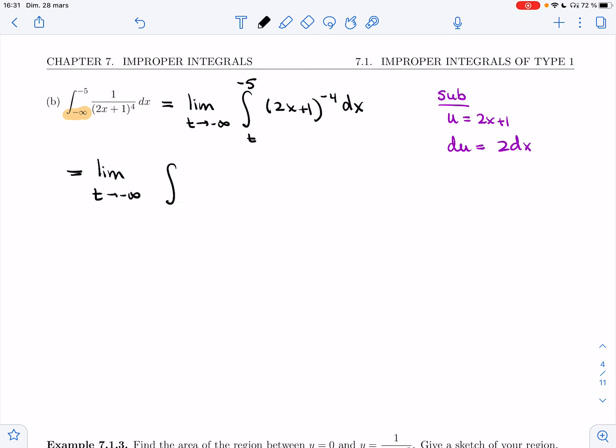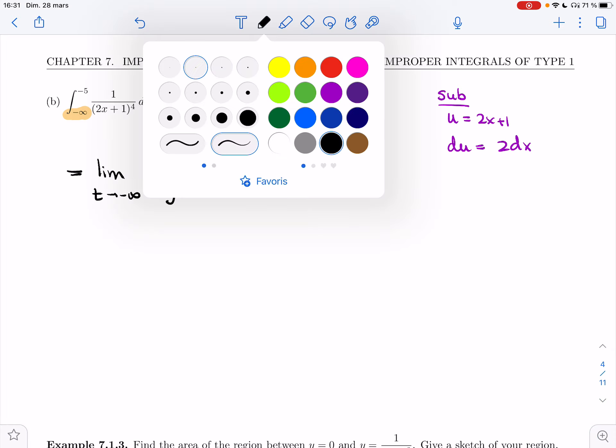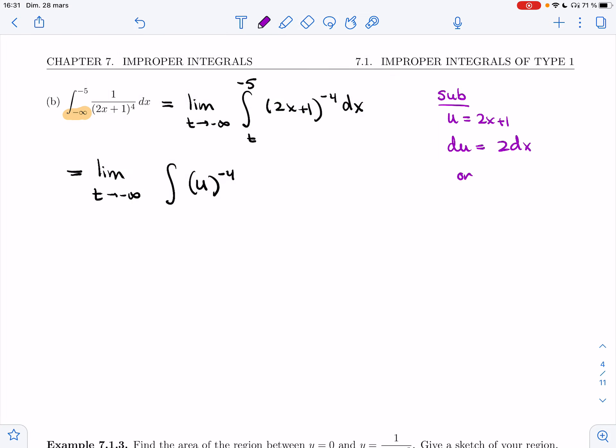If I plug in t, wait, so u instead of 2x plus 1 to the minus 4 dx, let's figure out what dx is. So dx is 1 half du, and so I'm going to get 1 half du right here.